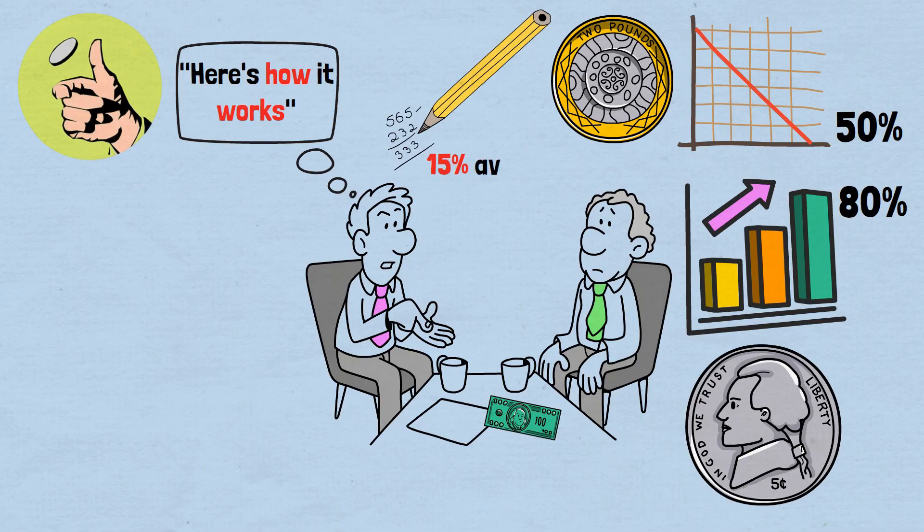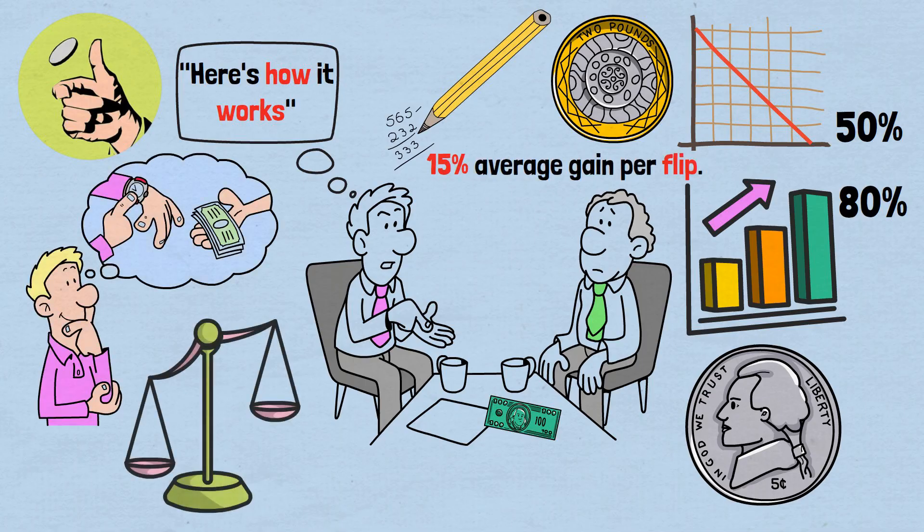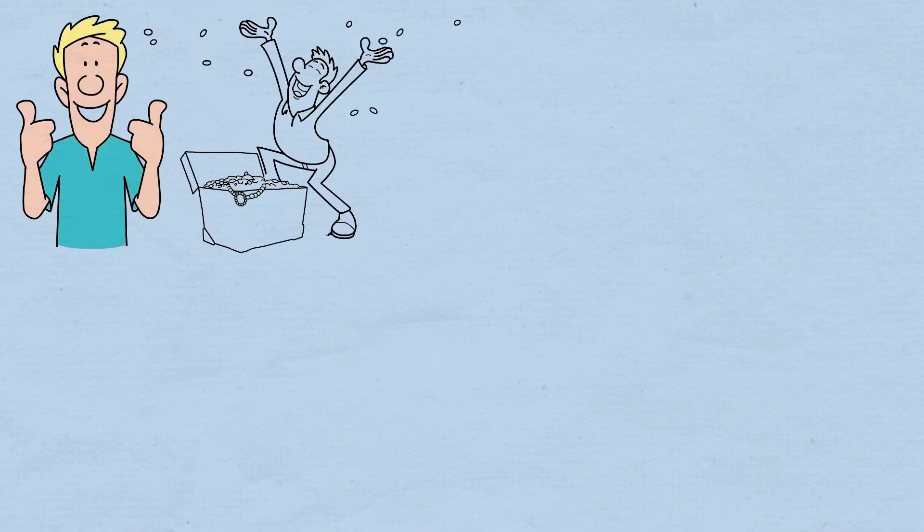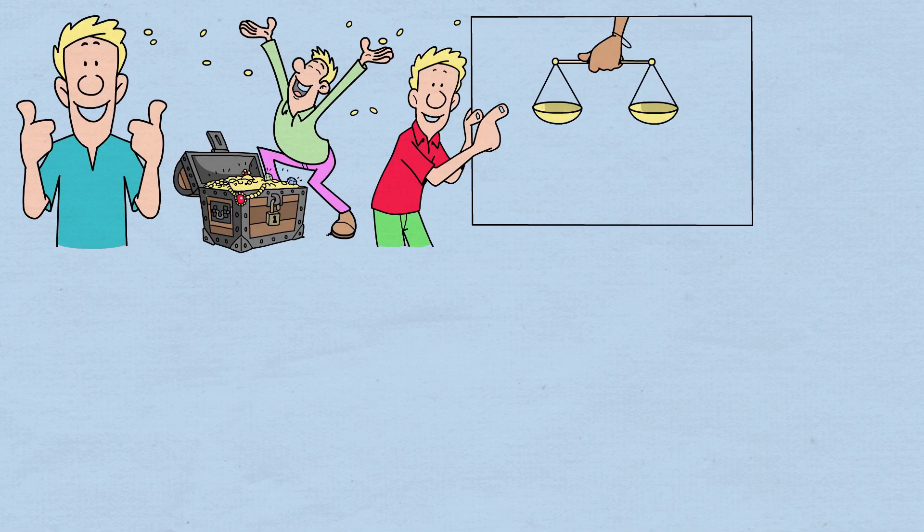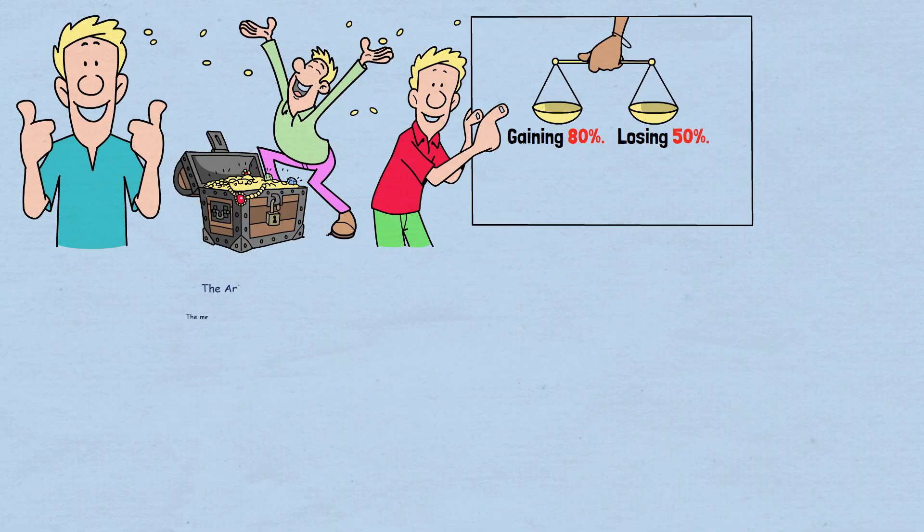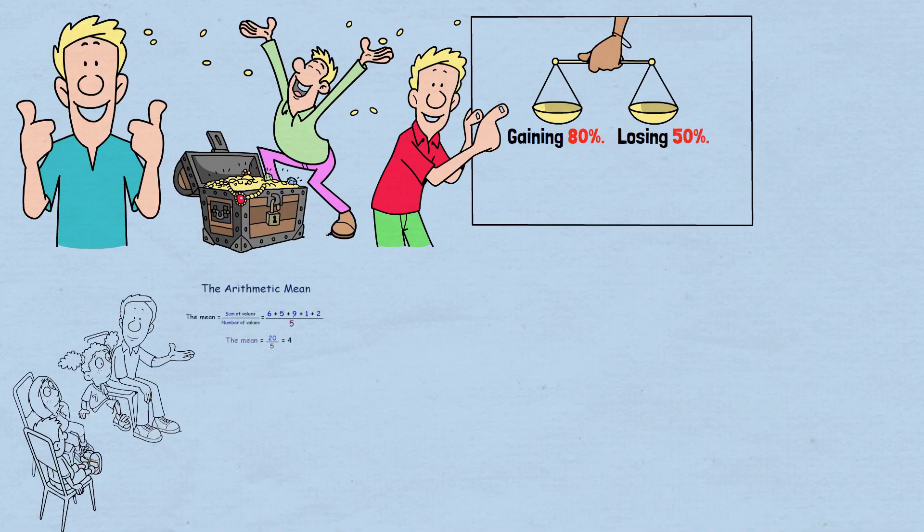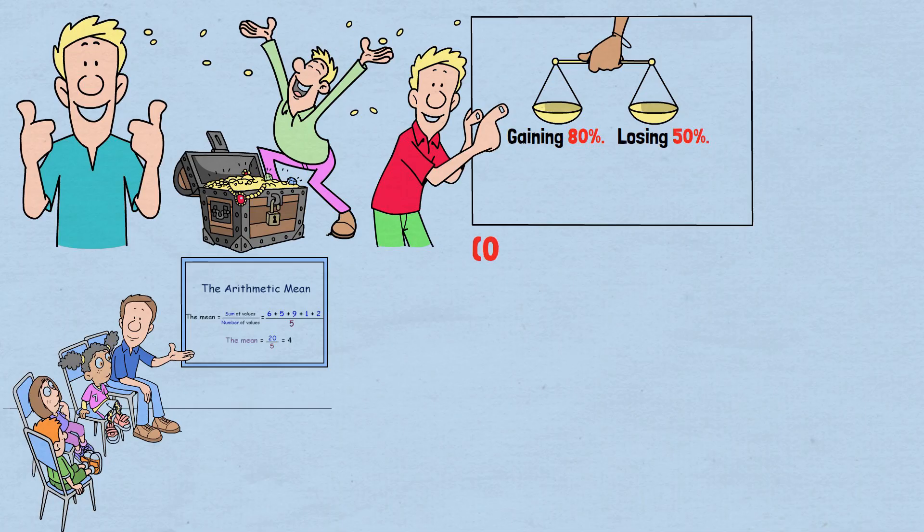Simple math says you're getting a 15% average gain per flip. Your mental calculator kicks in. An 80% gain versus a 50% loss. The odds are clearly in your favor. This should be easy money. Let's break down what seems obvious. You have a 50% chance of gaining 80% and a 50% chance of losing 50%. The arithmetic mean, the simple average we all learned in school, gives us 0.8 plus negative 0.5 divided by 2 equals 0.15, or a 15% average gain per coin toss.